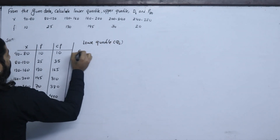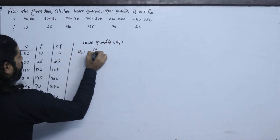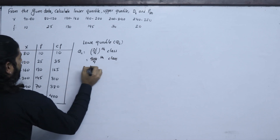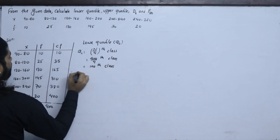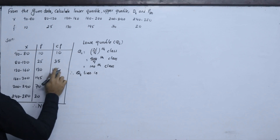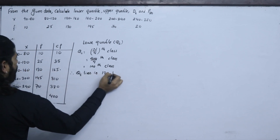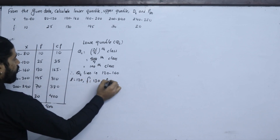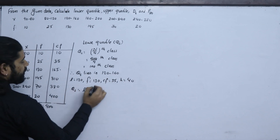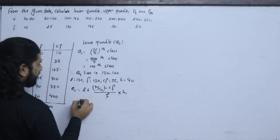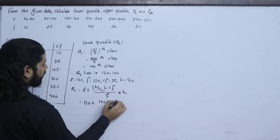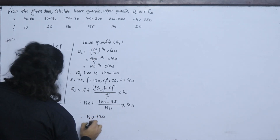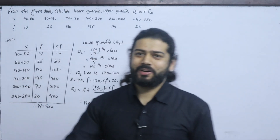For Q1 (lower quartile): Q1 = n/4 = 400/4 = 100. The 100th value lies in the class 120–160. Using the formula: Q1 = L + (n/4 − CF) / F × H = 120 + (100 − 35) / 130 × 40 = 120 + 20 = 140. So the lower quartile Q1 is 140.